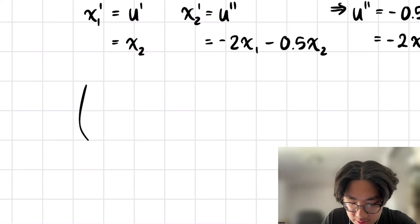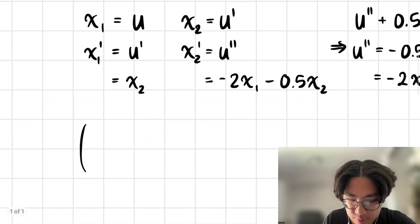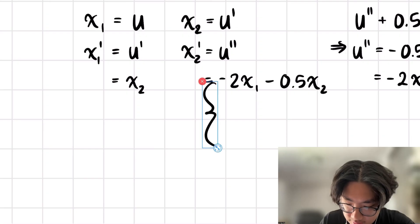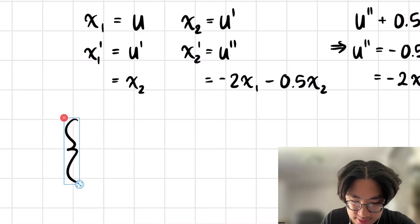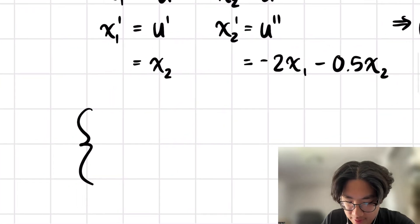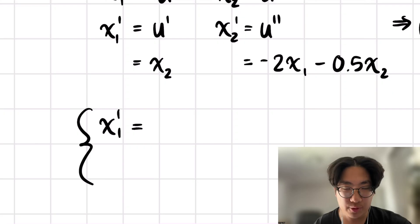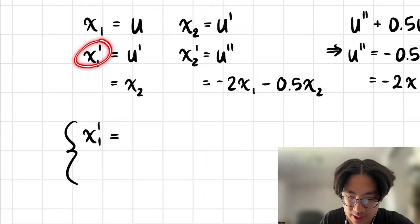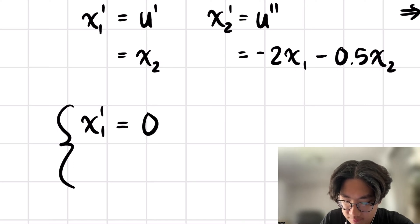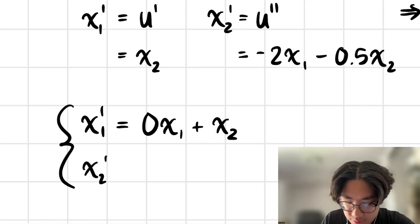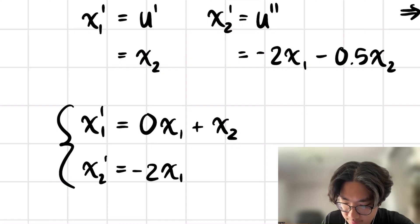So I have this pre-drawn here. First we have x1 prime. I'm going to write zeros wherever we don't have the variable present. x1 prime, we only have x2. So I'll write 0x1 plus x2. And then for x2 prime, we do have both variables. So we have negative 2x1 minus 0.5x2.